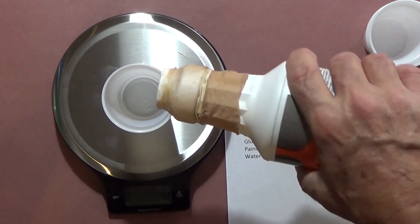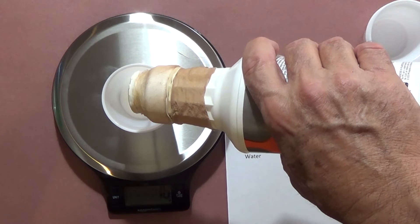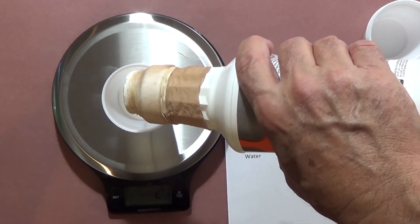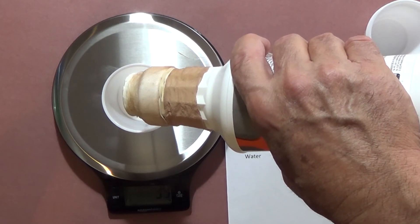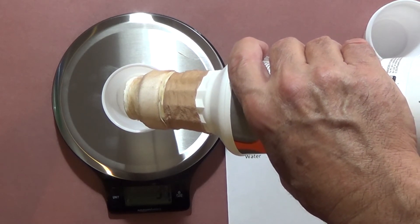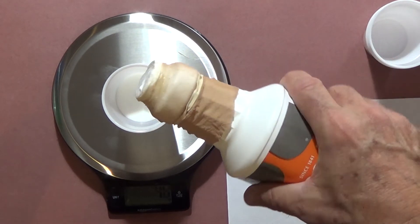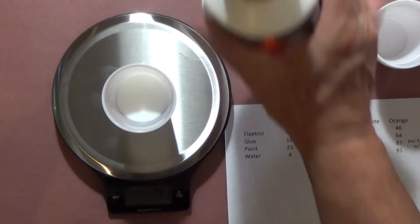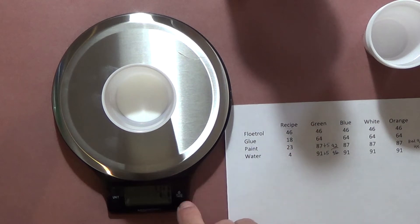Then I'm going to put my 46 grams of Floetrol in. I'm going to do this one color on video, and then I may fast forward through another color, but you'll understand what I'm doing without seeing me mix every single color. You don't have to watch it four times to get it. Okay, so I went one gram over, that's 47. Now what I'm going to do instead of doing all these totals and everything is just re-tare my scale, set it back to zero, and then I'm going to come in and add the 18 grams of glue.